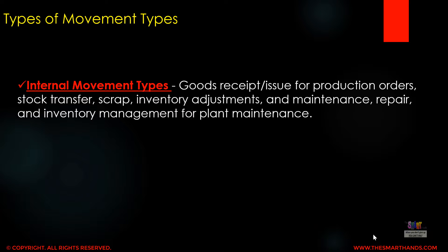Now, types of movement types — there are basically two types. The first one is internal movement types. As the name suggests, internal means all transactions happening within a company for internal purposes. For example: goods received for a production order, stock transfer between plants or between storage locations, scrap, inventory adjustment, or maintenance, repair, and inventory management for plant maintenance. These all fall under internal movement types.